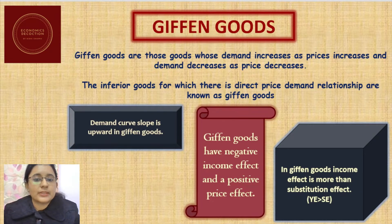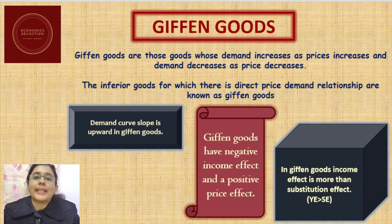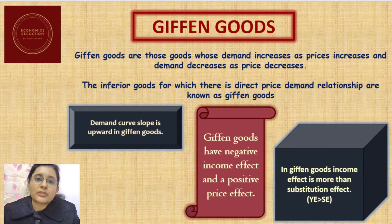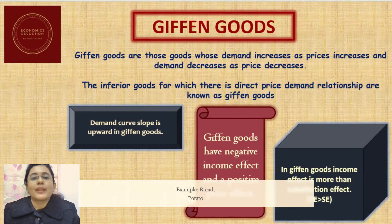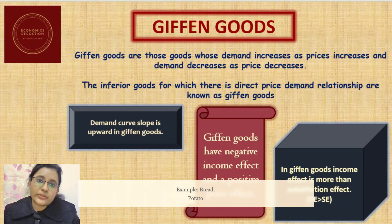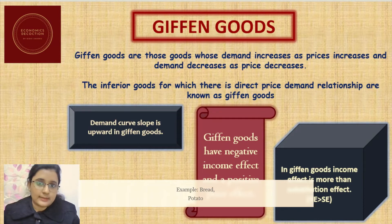Now these are Giffen goods. Understand Giffen goods very well because they are the only goods which are an exception to the law of demand. Giffen goods are those goods whose demand increases as price increases and demand decreases as price decreases. The law of demand states that, keeping all other determinants of demand constant, when price of a commodity increases, quantity demanded decreases, and vice versa.